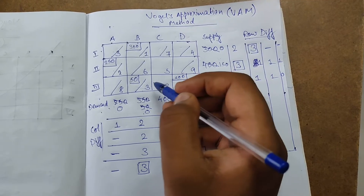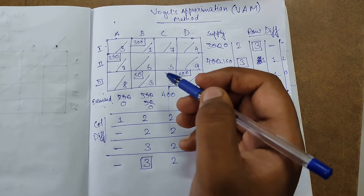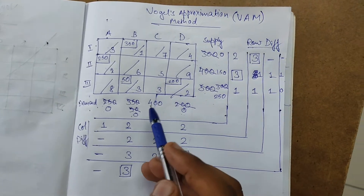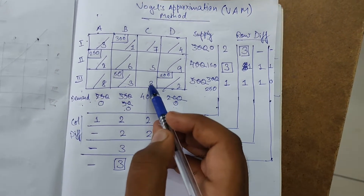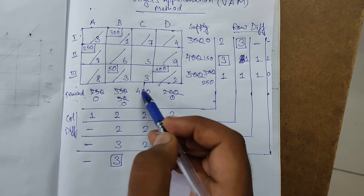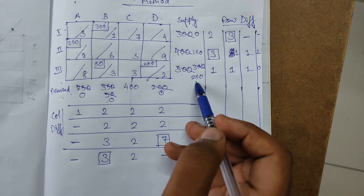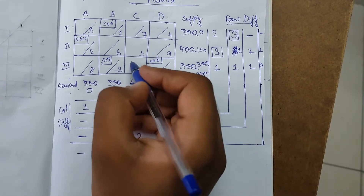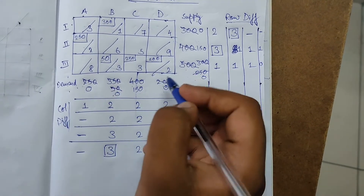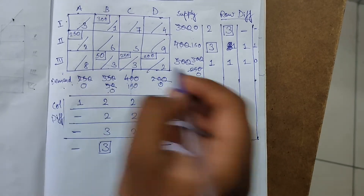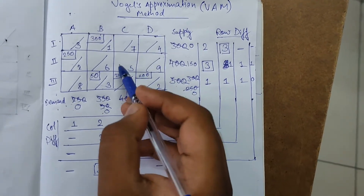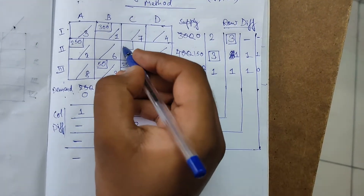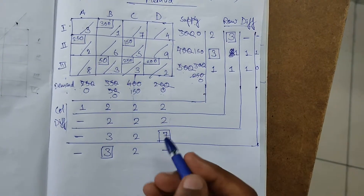We are left with two remaining elements: five and three. Since only two elements remain, no further iteration is needed — just find the least one, which is three. Demand is 400 and supply is 250 — subtract 250, leaving 150 demand remaining. Write 250 in the box and strike off that row. Finally, we are left with five: demand and supply are both 150, so subtract 150, write it in, and strike off the rest.